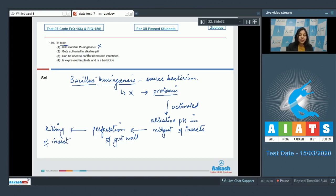Number two, 'gets activated in alkaline pH' - this is correct. Number three, 'can be used to control nematode infections' is incorrect as it is used to control insects. Number four, 'is expressed in plants and is a herbicide' is also incorrect as it is an insecticide. So the correct answer becomes option number two.